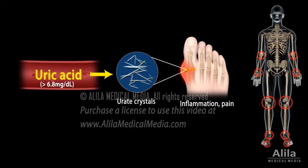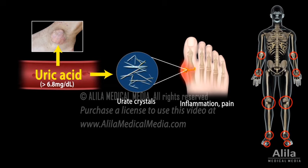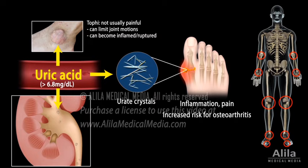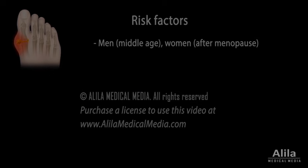Urate crystals may also deposit under the skin around the joints, forming hard lumps called tophi, that are not usually painful but can limit joint motions and lead to deformities. Joint damage caused by gout also increases the risk of developing osteoarthritis. In the kidneys, urate deposits may form stones, blocking urine flow.